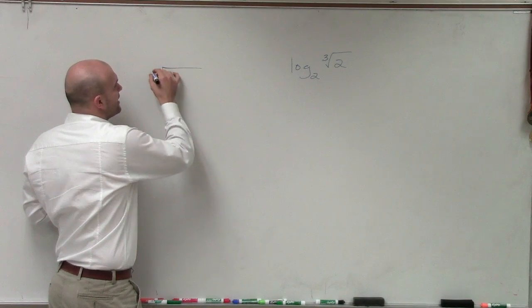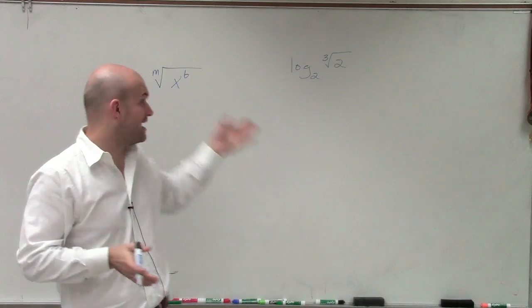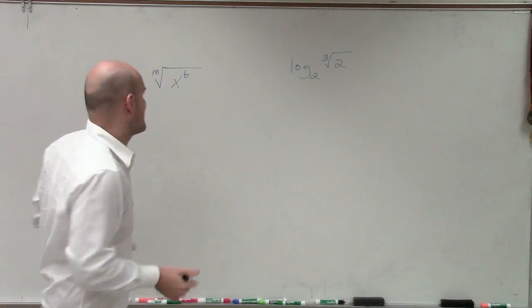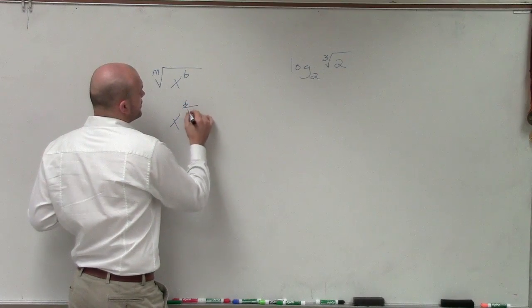If I have a radical represented by m, which is the root, and b, which is the power of my radicand, I could rewrite this as a rational exponent as b over m.